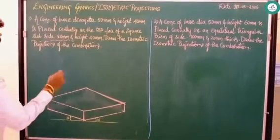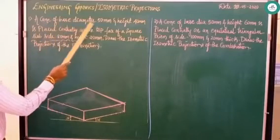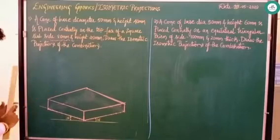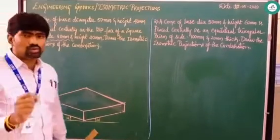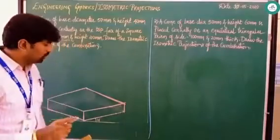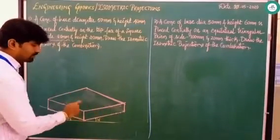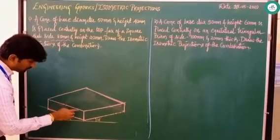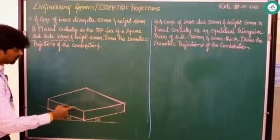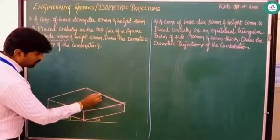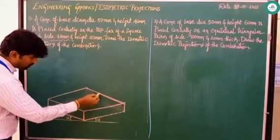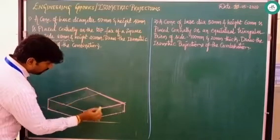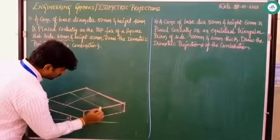A cone of base diameter 50 mm and height 40 mm is centrally placed on top of the square slab. You need to understand how to identify the center. Don't identify the center by drawing the diagonals. Instead, identify the midpoint of each side. The side is 80 mm, so mark at 40 mm. Mark 40 on this side and join with a very thin line. Again on the other side, mark at 40 and draw the thin line.